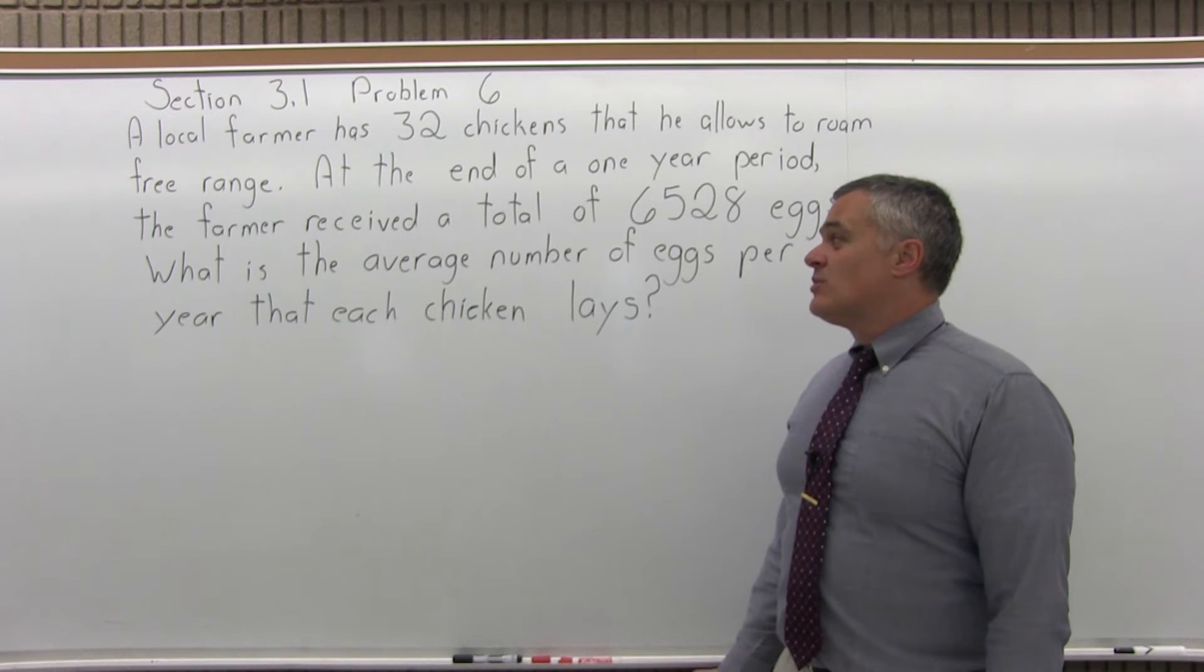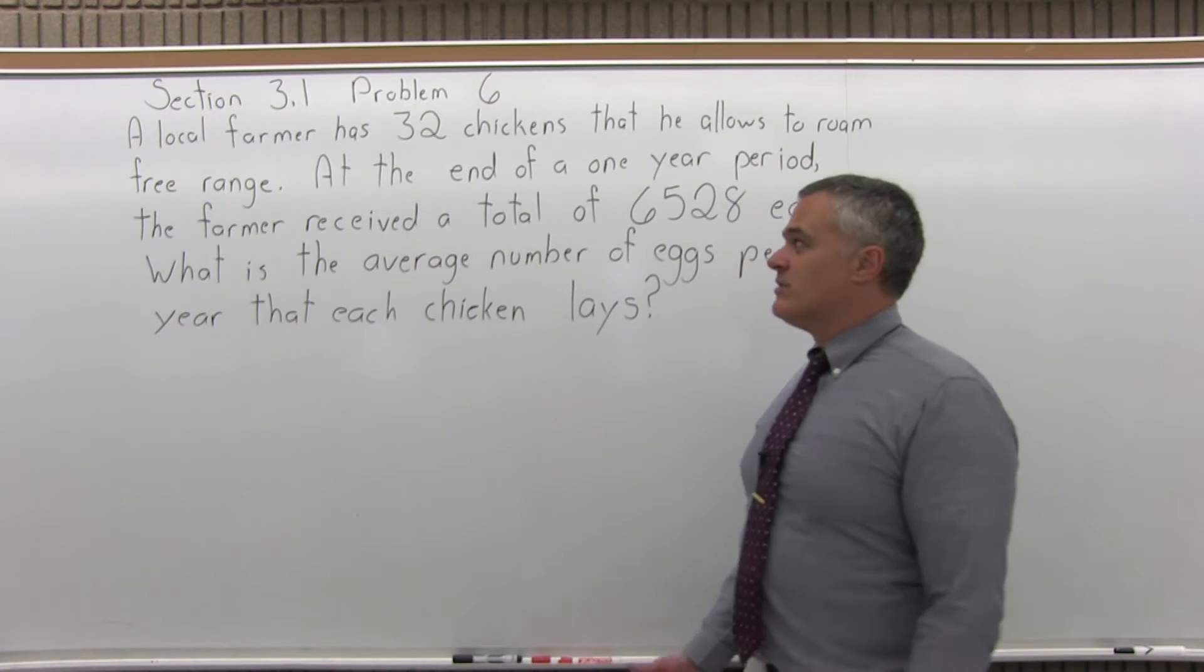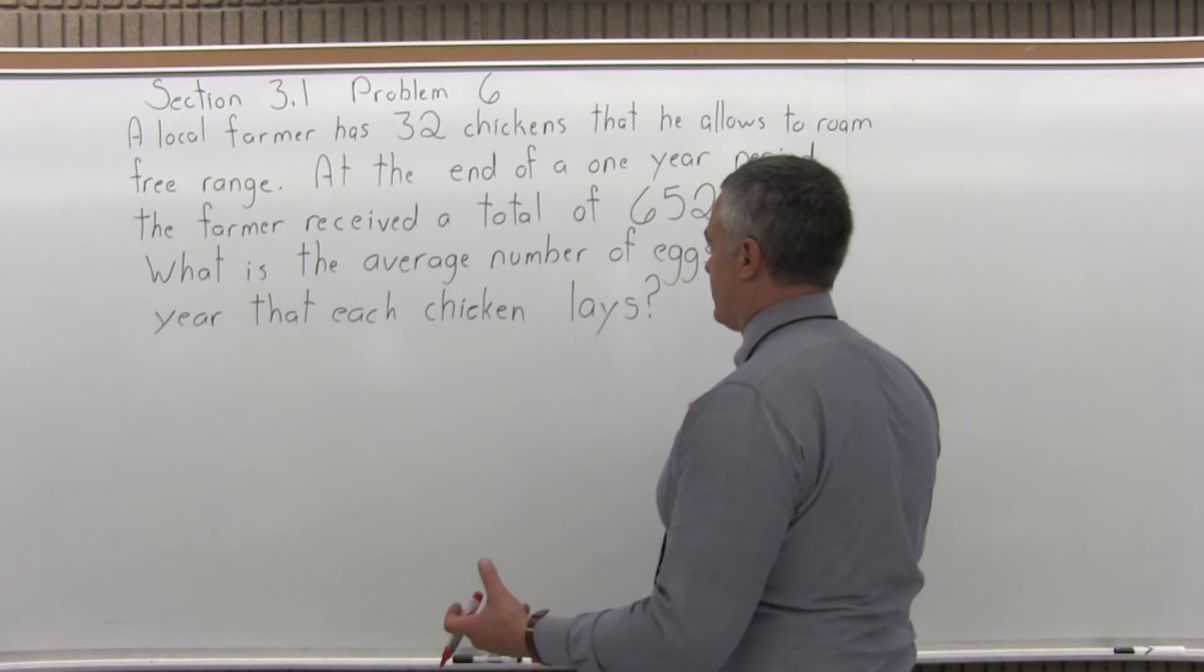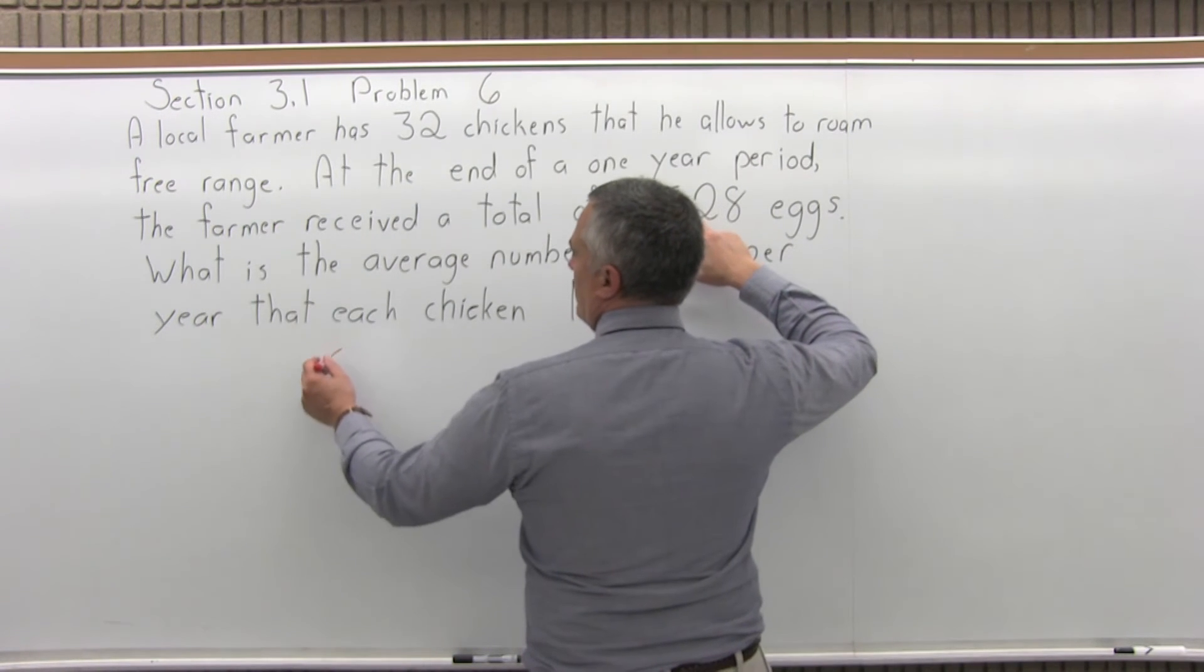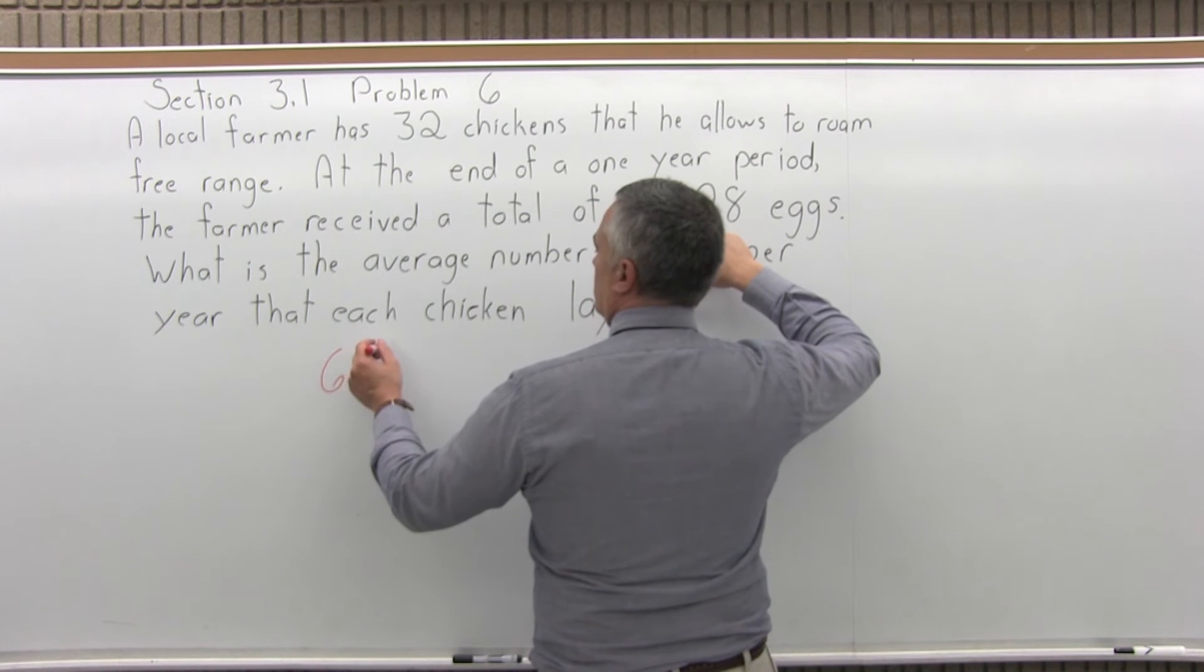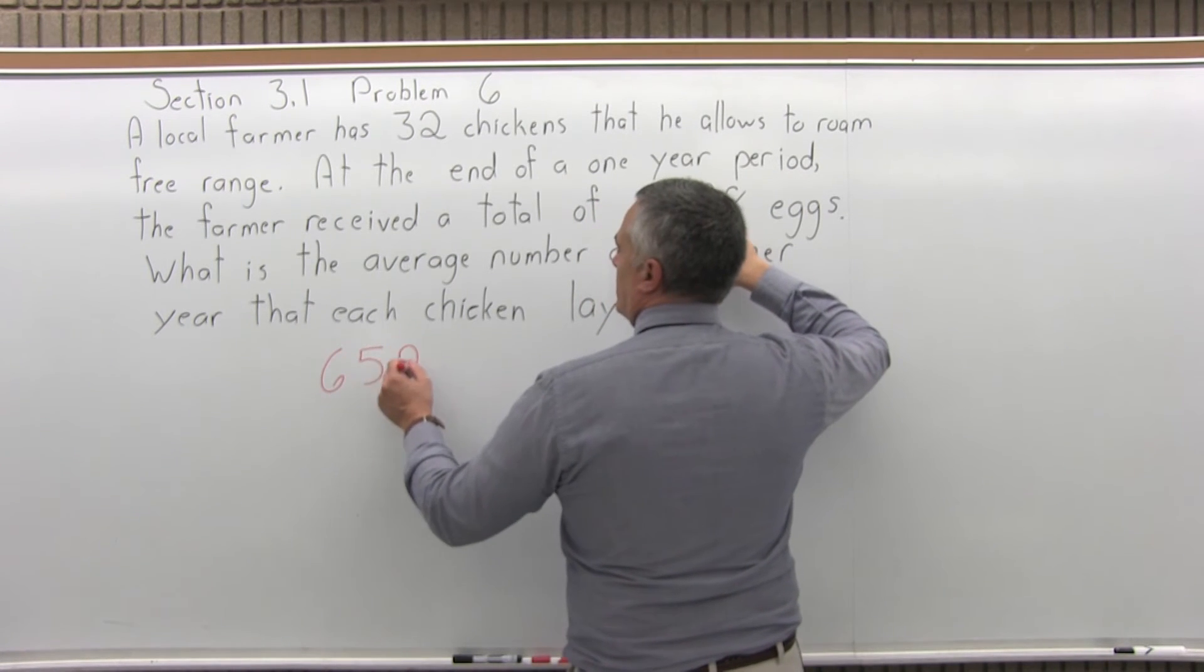So basically with this problem, the total is already given to you. It would be some amount of work to keep track of all the eggs, add them together day by day. But after that work is done, that total would come to 6,528.